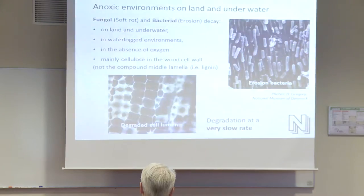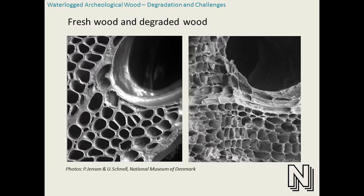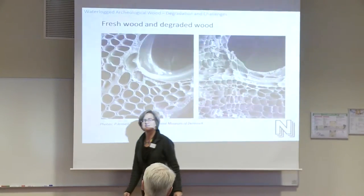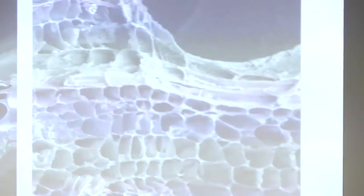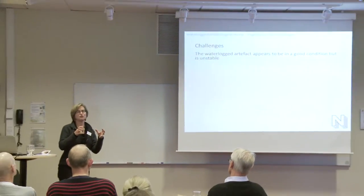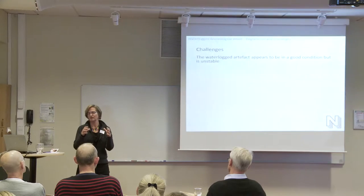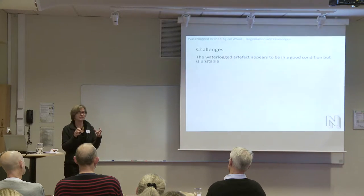This is why we have the wood, but it is a bit tricky. In fresh wood under the microscope, you have a very sound middle lamella and secondary walls. In degraded wood, the only thing left is the compound middle lamella. But in waterlogged wood, the cell lumen — all these cells — are filled with water. And that is our luck, because the water keeps the wood swollen and keeps the shape of the wood. But it is also tricky, because it makes all waterlogged artifacts look like they are in very good condition, when in fact they are unstable.